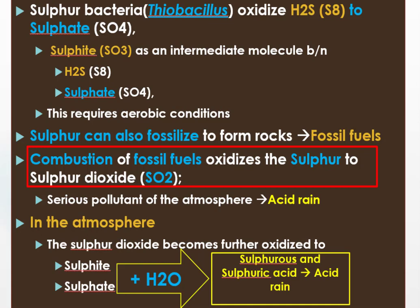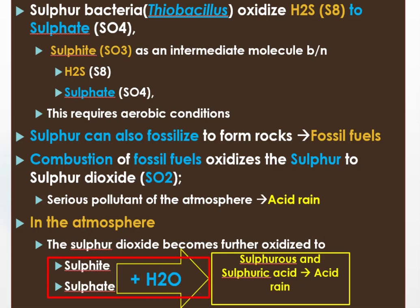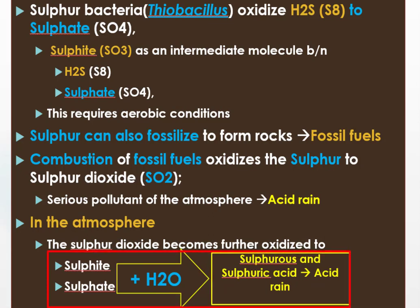In the atmosphere, this sulfur dioxide becomes further oxidized to sulfite and sulfate molecules. These sulfite and sulfate molecules can react with water vapor in the atmosphere and produce sulfurous and sulfuric acid respectively. In this case, sulfur gets back to the ground through acid rain in the form of sulfurous and sulfuric acid.